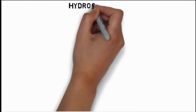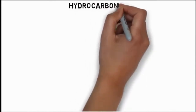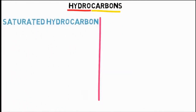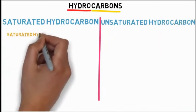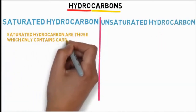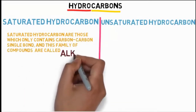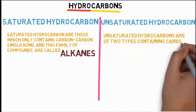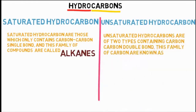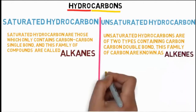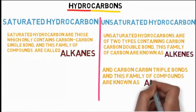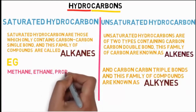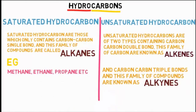Hydrocarbons. As the name suggests, the compounds formed of hydrogen and carbon are called hydrocarbons. They are of 2 types: saturated hydrocarbons and unsaturated hydrocarbons. Saturated hydrocarbons are those which only contain carbon-carbon single bonds, and this family of compounds is known as alkanes. For example, some compounds of alkanes are methane, ethane and propane.